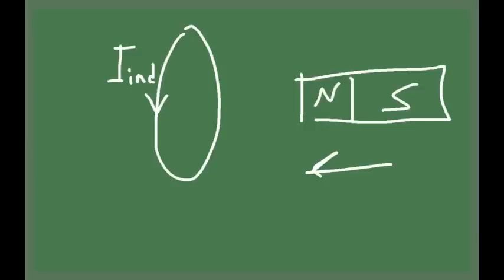Is it a magnetic force? It's not, because a charge inside the wire needs to be moving to experience a magnetic force. If there's no motion of that charge, there's no magnetic force on it. But the charge is not moving because the coil is not moving — it's the magnet that is moving, not the coil. So it's not a magnetic force that explains why the charge starts to spin. It must be an electric force, because electric forces make charges move, so there must be some electric field responsible for making these charges spin around.